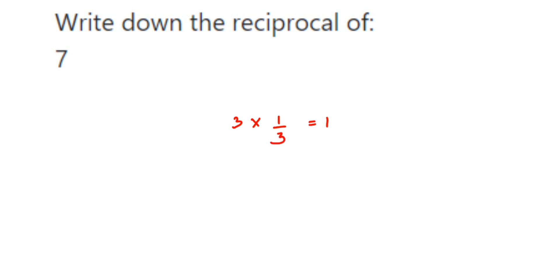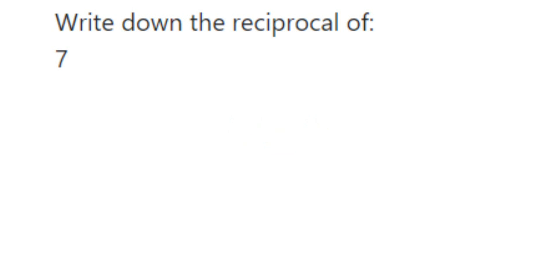For 3 there's no denominator, but we can write 3 as 3 by 1. So you just interchange the numerator and denominator — 1 by 3 is the reciprocal of 3. Similarly, reciprocal of 7 will be found the same way: just change the numerator and denominator.